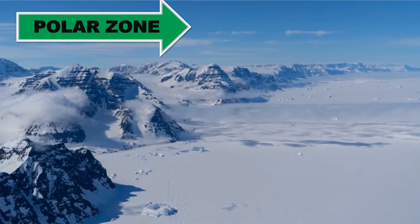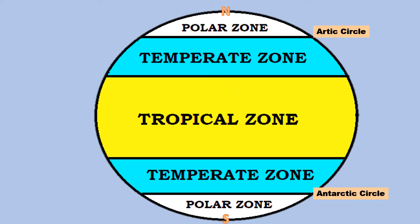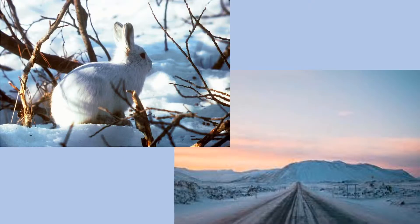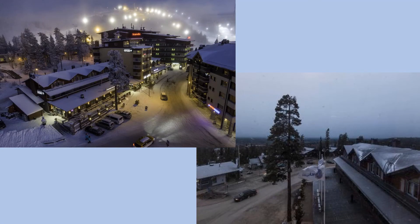The polar zone. There are two polar zones on Earth. One starts at the North Pole and ends at the Arctic Circle, while the other starts from the South Pole and ends at the Antarctic Circle. This is the coldest zone.